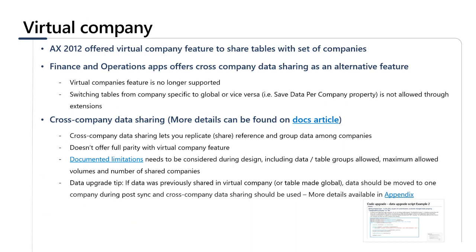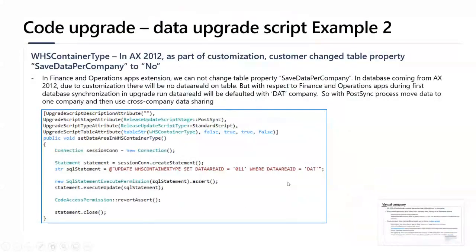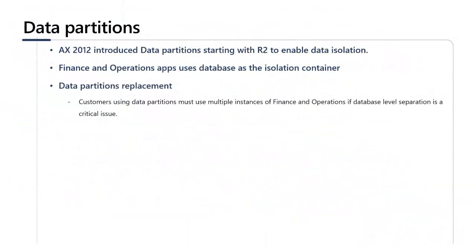If you are working with a customer who used virtual companies or made a company-specific table global, there is an important consideration from a data upgrade script perspective. You need to create a data upgrade script that moves the data into a specific company before configuring Cross-Company Data Sharing. A sample script is provided in the appendix of the slides. The fourth consideration is data partitions: in AX 2012 R2, data partitions were introduced to enable data isolation. In Finance and Operations, the database itself serves as the isolation container. Data partitions are no longer available. If database-level separation was critical, consider using multiple instances of Finance and Operations — think of each partition as a separate instance.